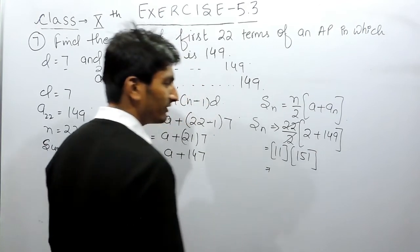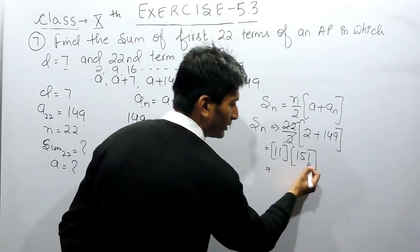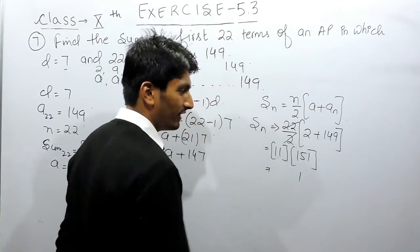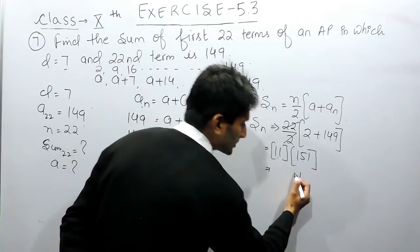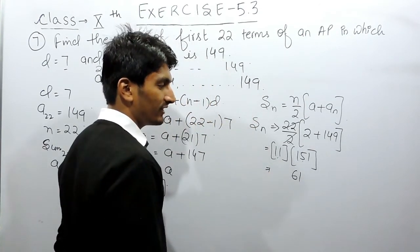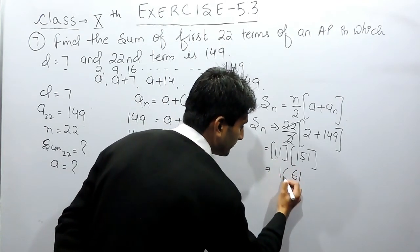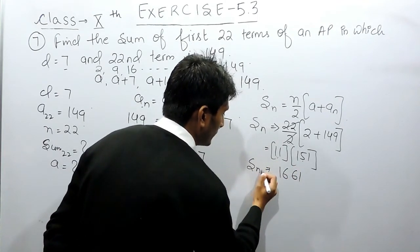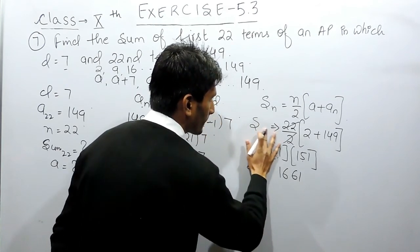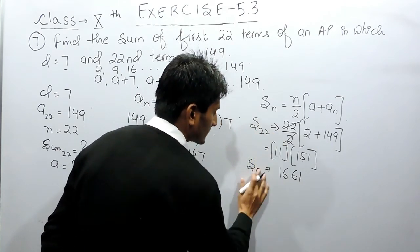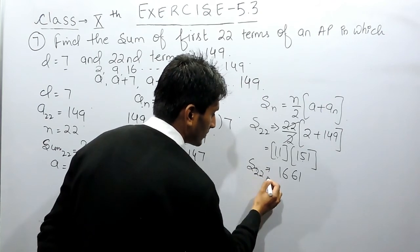If I multiply 11 with 151: 11 × 1 is 11 carry 1, 11 × 5 is 55 plus the carry becomes 56, 11 × 1 is 11 plus 5 carry is 16. So the sum of these 22 terms will be equal to 1661.